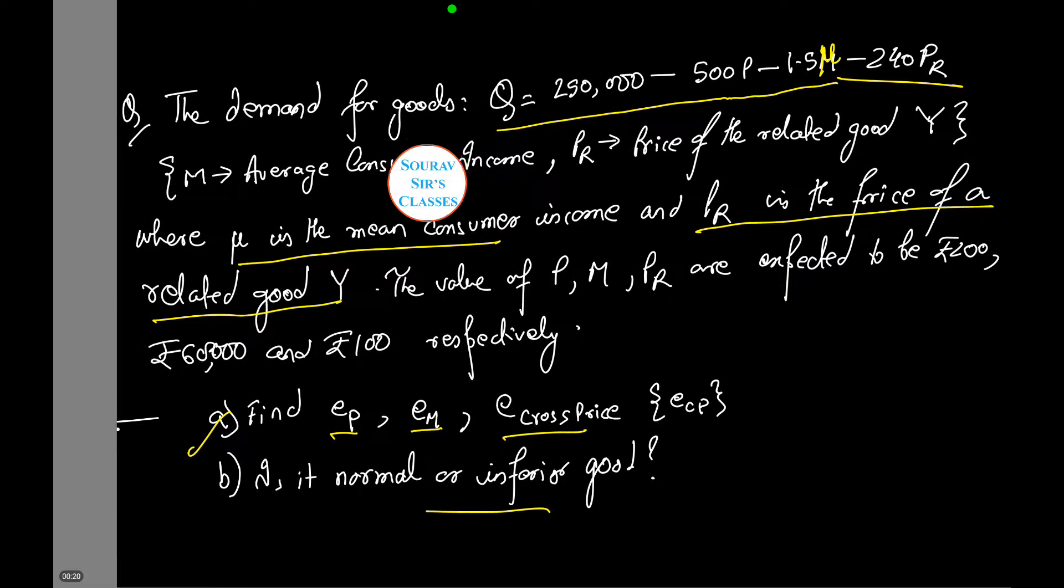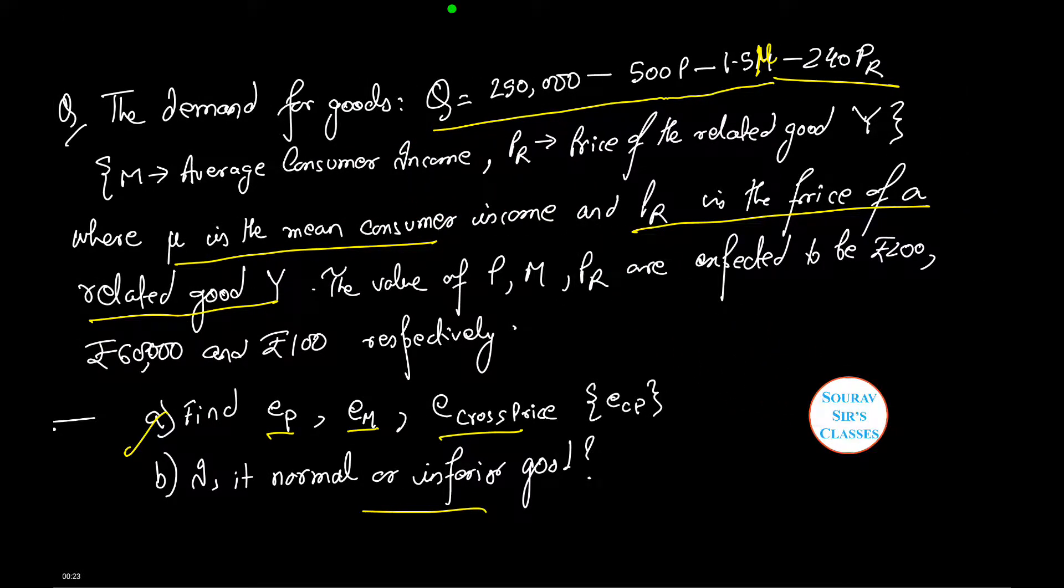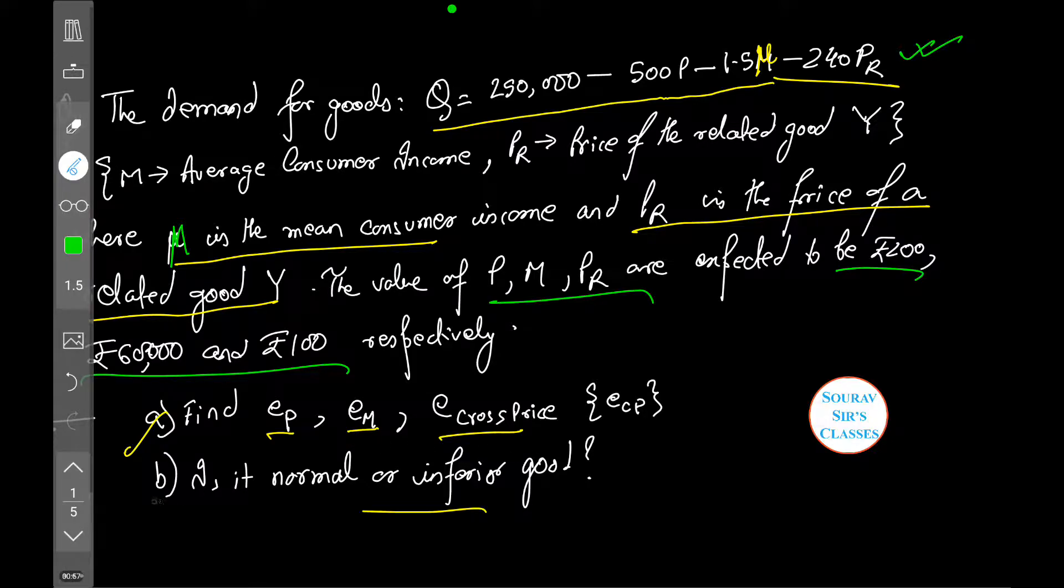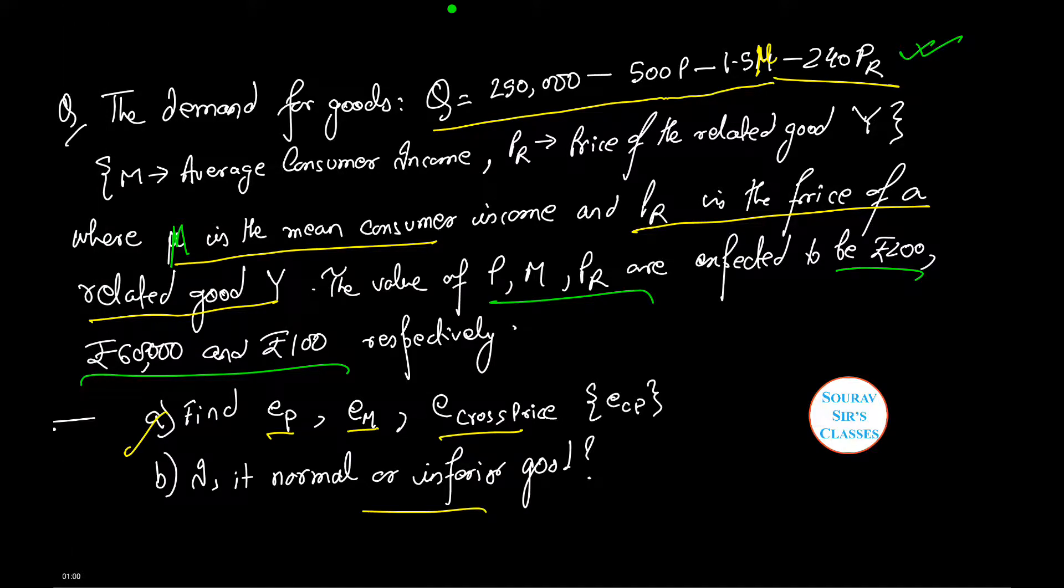In the first question that we have, we are given the demand for goods, Q equals to the following, where M is the average consumer income and PR is the price of the related good Y. The value of PM and PR is expected to be the following. Now we need to find the price elasticity, the income elasticity, and the cross price elasticity. We also need to determine whether the good here is normal or an inferior good.